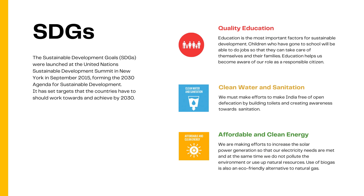Clean water and sanitation — we must make efforts to build toilets and create awareness towards sanitation. Industrial pollution is polluting our water resources, which in the near future will cause scarcity of clean and usable water. We must take measurable steps by promoting awareness to keep water sources clean. Next is affordable and clean energy — using solar power generated by the sun does not cause pollution as it does not require burning of non-renewable fuels such as coal. We are making efforts to increase solar power generation so that our electricity needs are met while we do not pollute the environment or deplete natural resources. Use of biogas is also an eco-friendly alternative to natural gas.